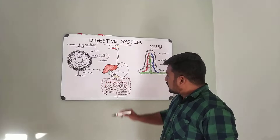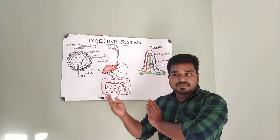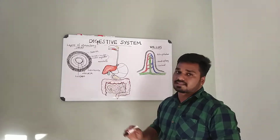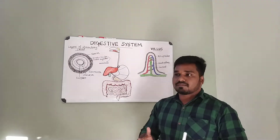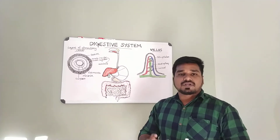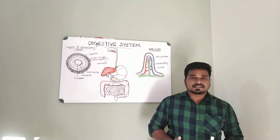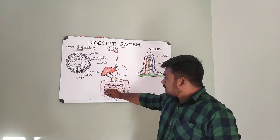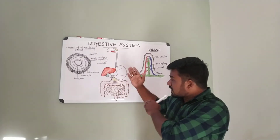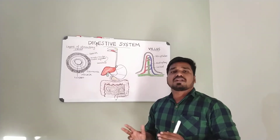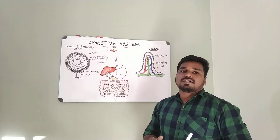The large intestine is responsible for the absorption of water and electrolytes from the remaining waste products. It also contains micro-organisms. There are mass movements — peristaltic contractions — that propel waste through the large intestine toward the rectum.